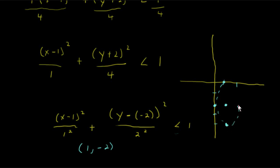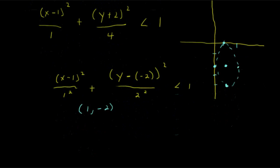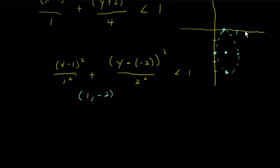And so our ellipse will look something like this. There's our ellipse. Now we have a nonlinear inequality. Do we shade on the inside or the outside of this? Well, let's pick a test point.